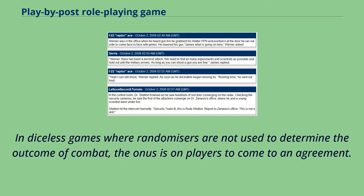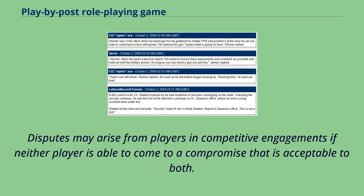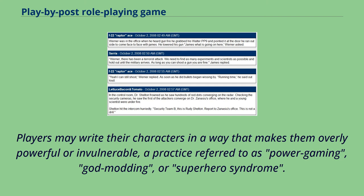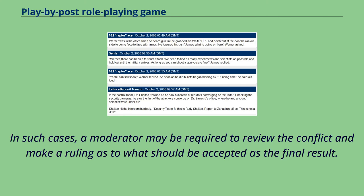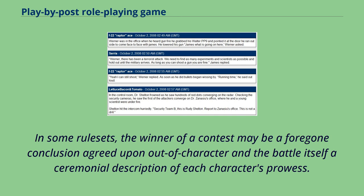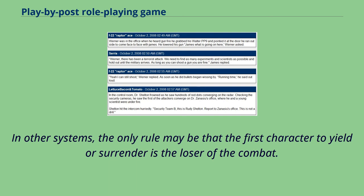In diceless games where randomizers are not used to determine the outcome of combat, the onus is on players to come to an agreement. Disputes may arise from players in competitive engagements if neither player is able to come to a compromise that is acceptable to both. Players may write their characters in a way that makes them overly powerful or invulnerable, a practice referred to as power-gaming, god-modding, or superhero syndrome. In such cases, a moderator may be required to review the conflict and make a ruling as to what should be accepted as the final result. In some rule sets, the winner of a contest may be a foregone conclusion agreed upon out of character, and the battle itself a ceremonial description of each character's prowess. In other systems, the only rule may be that the first character to yield or surrender is the loser of the combat.